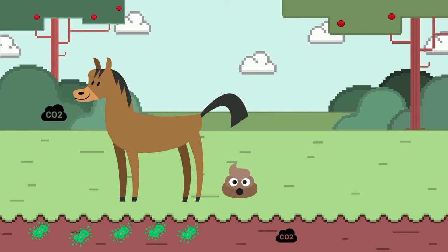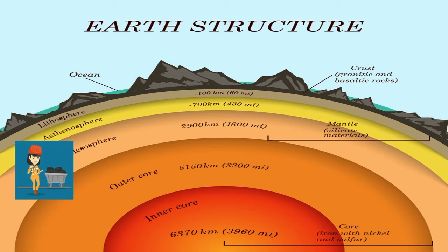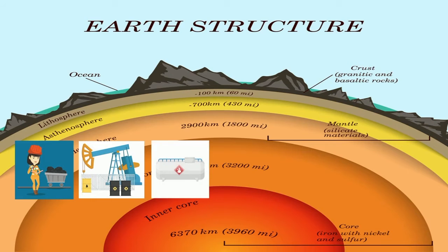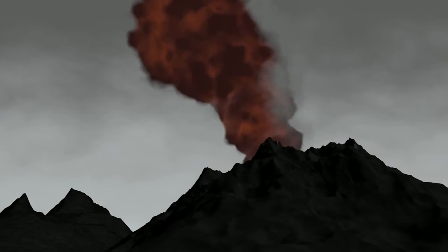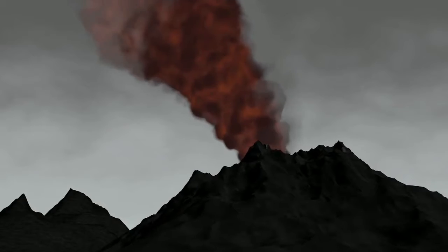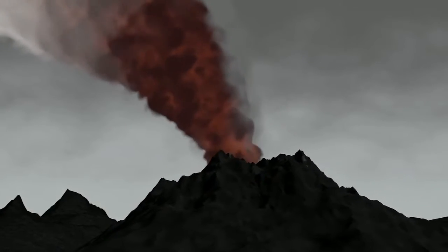Carbon is also stored in the Earth's interior. Carbon in the lithosphere includes fossil fuels like coal, oil, and natural gas, along with deposits like limestone. Volcanoes may release some of this carbon stored in the lithosphere when they erupt.